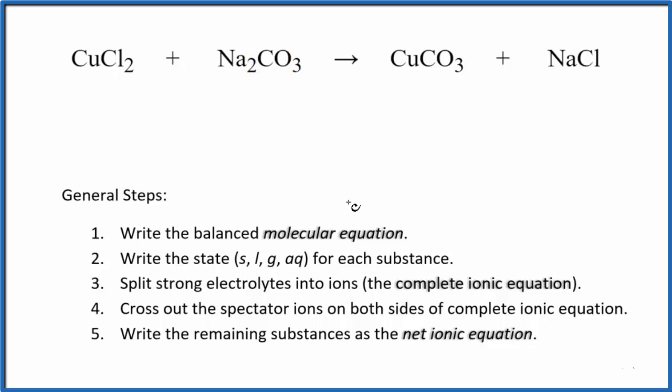The first thing we need to do with net ionic equations is balance the molecular equation. This is the molecular equation here. I can see there's two sodium atoms here, just one here. Let's put a 2 in front of the sodium chloride. That balances the sodiums. Now I have two chlorine atoms, and I have two over here. Everything else is the same. This is the balanced molecular equation.